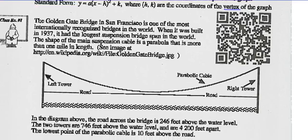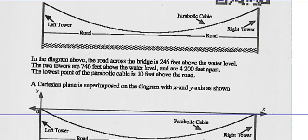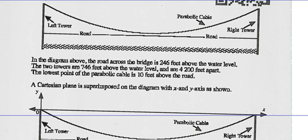Let's look at example one. The Golden Gate Bridge in San Francisco is one of the most internationally recognized bridges in the world. When it was built in 1937, it had the longest suspension bridge span in the world. The shape of the main suspension cable is a parabola that's more than one mile in length. In the diagram, the road across the bridge is 246 feet above water level. The two towers are 746 feet above water level and 4,200 feet apart. The lowest point of the parabolic cable is 10 feet above the road.